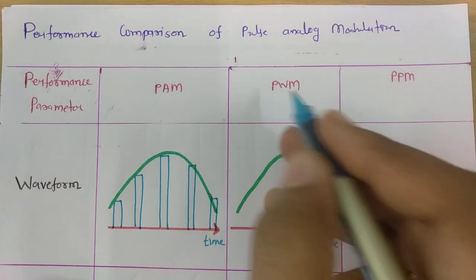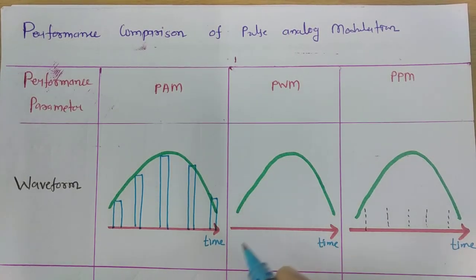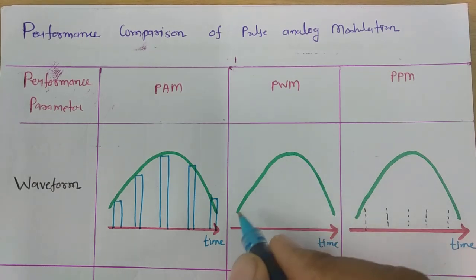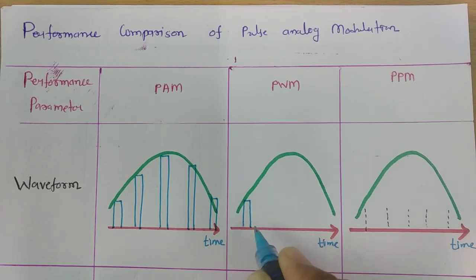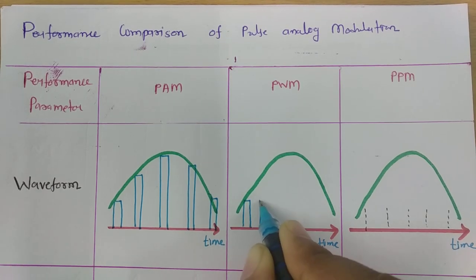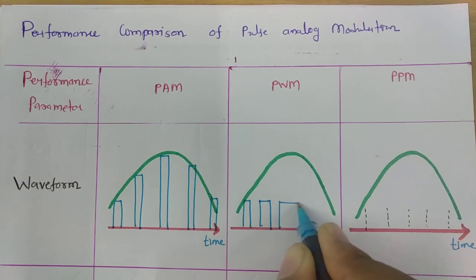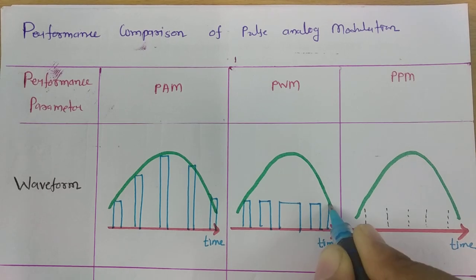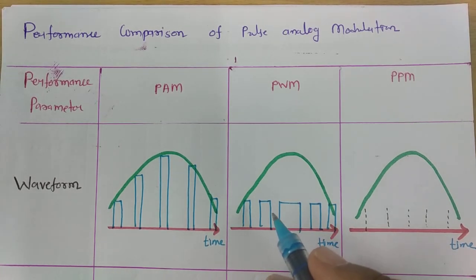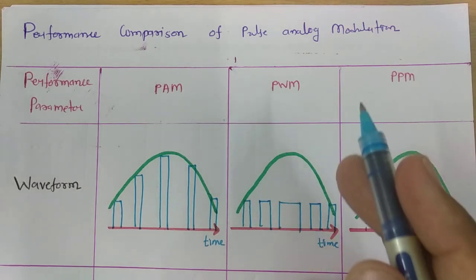Now when we talk about PWM — that is Pulse Width Modulation — the width of the pulse changes with respect to the input modulating signal. Over here, amplitude is less, so the width of pulse is less. But as you move ahead, width of pulse will increase because amplitude is increasing. At the point where amplitude is maximum, width of pulse is maximum. Then as amplitude decreases, width of pulse will decrease. This is how you will find the PWM output, where width of pulse changes with respect to amplitude of the modulating signal.